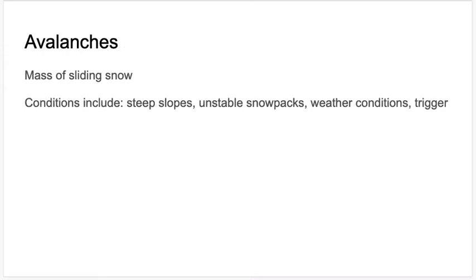The last physical hazard is avalanches — masses of sliding snow. Particular conditions increase the risk: slopes greater than 30 degrees, unstable snowpacks where weak soft snow is covered by dense heavy wet snow and frozen layers that can slide past one another. Poor weather conditions such as warming weather can increase avalanche risk. Sometimes there are triggers — a smaller avalanche can trigger a much larger one as the vibration travels up the mountain through the snowpack.